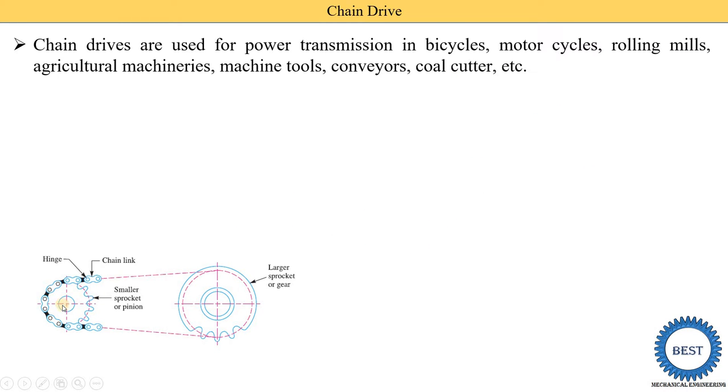Here we see that this is a shaft. On the shaft, the sprocket is mounted. This is the second shaft. On the second shaft, the larger sprocket is mounted. And the chain is moved over both the sprockets.